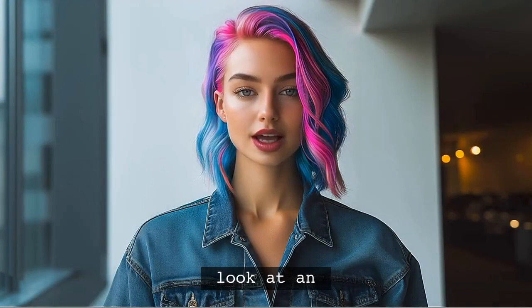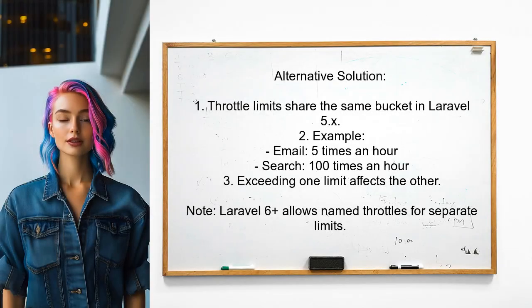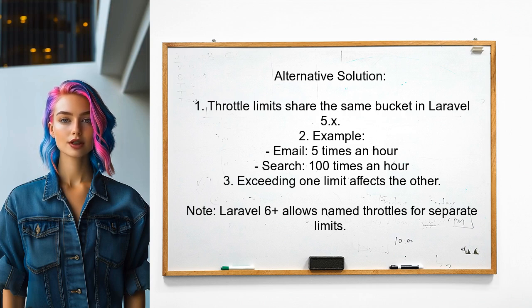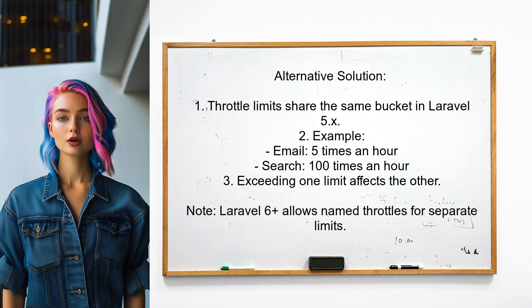In Laravel 5.x, all throttle instances share the same rate limit bucket. This means if you set different throttle limits in various routes, they will still affect each other. For example, if a user can search 100 times an hour and email 5 times an hour, exceeding the search limit will also prevent them from emailing. This limitation is resolved in Laravel 6 and later, where named throttles allow for separate buckets.